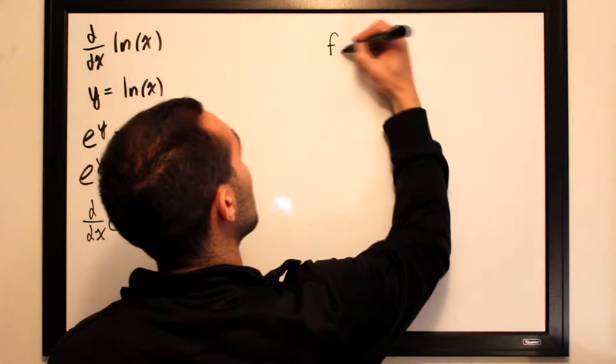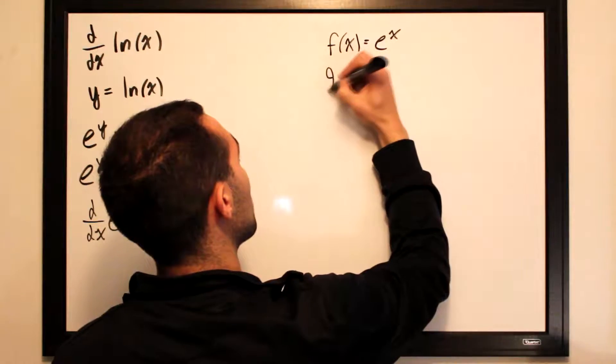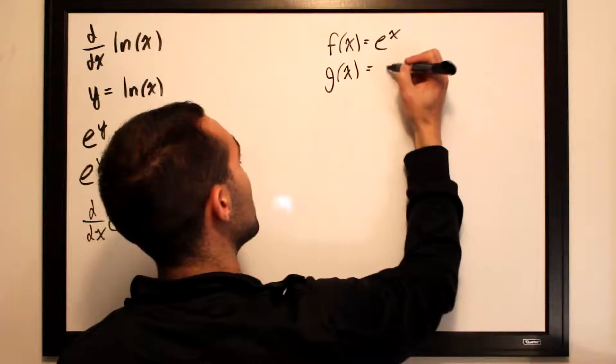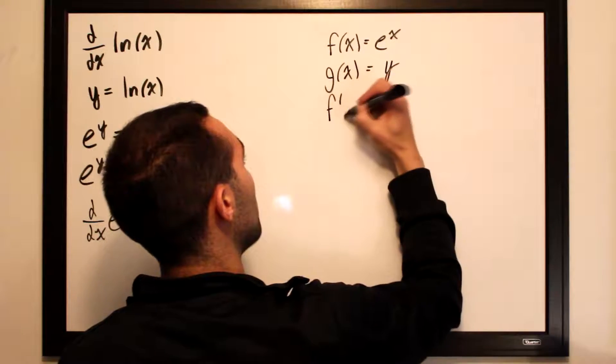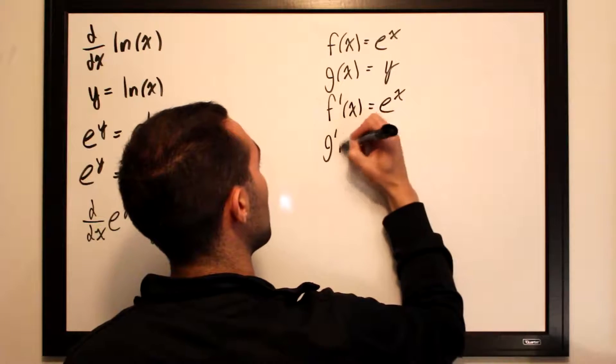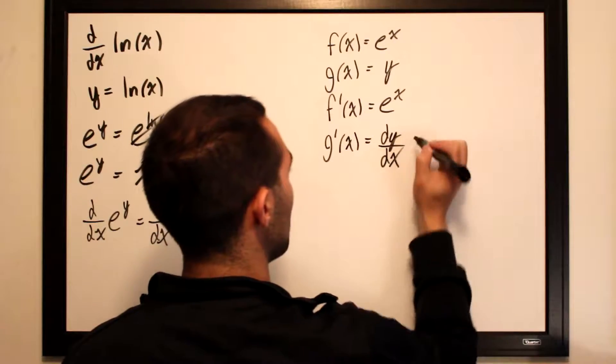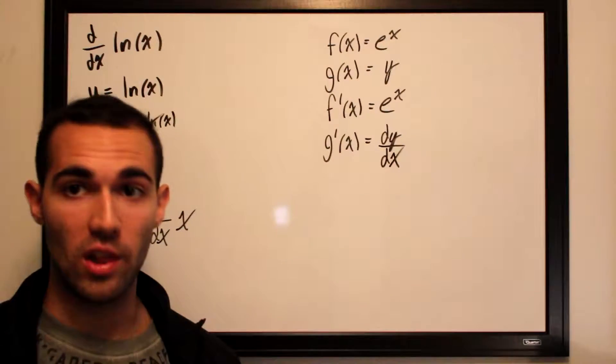So we can differentiate that using the chain rule. Our outer function will be e to the x. The function which is trapped within our outer function is y. The derivative of our outer function is e to the x, and the derivative of our inner function is dy by dx, which is what we're going to be solving for later on.